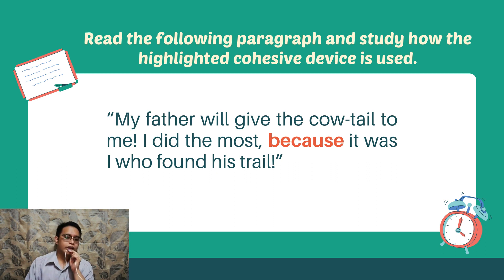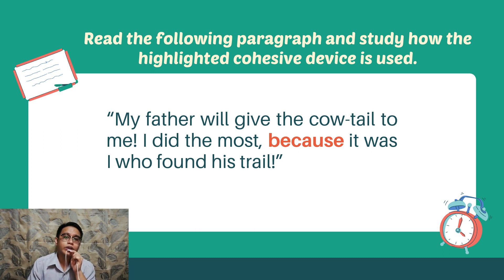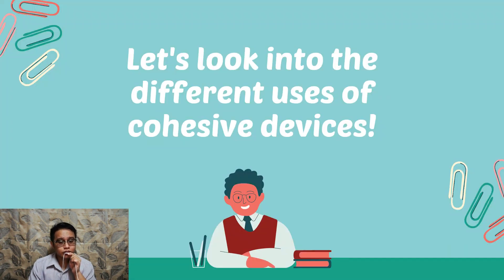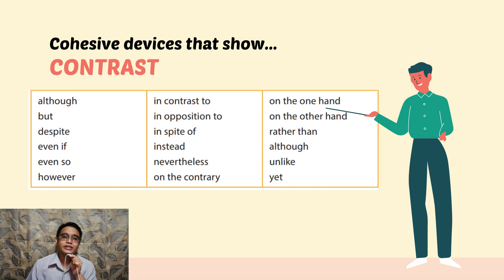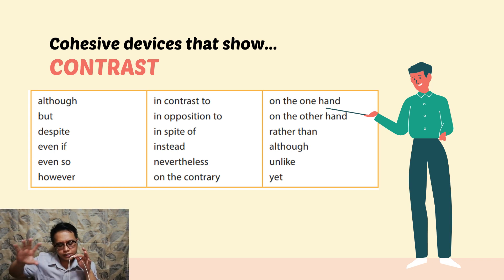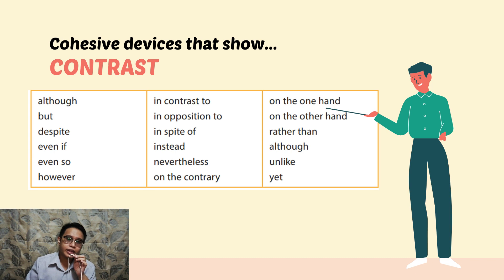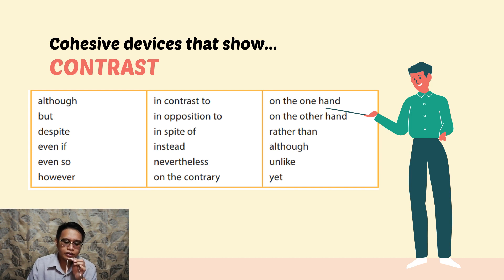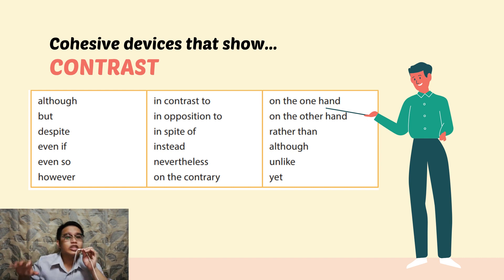So now we can classify cohesive devices according to their purposes. The first category is cohesive devices that show contrast. These are words that tell us one idea is different from another. They include: although, but, despite, even if, even so, however, in contrast to, in opposition to, in spite of, instead, nevertheless, on the contrary, on the other hand, on one hand, rather than, unlike, and yet.